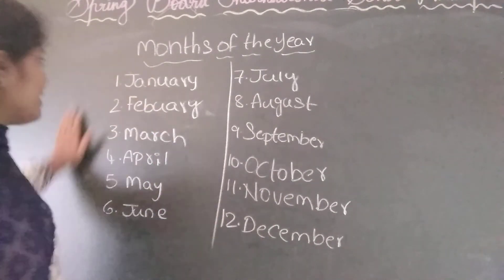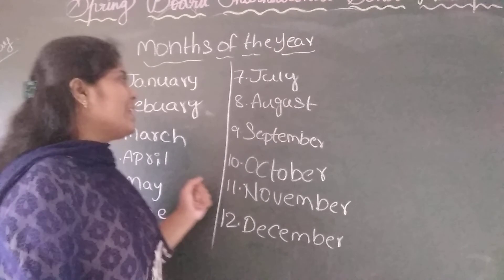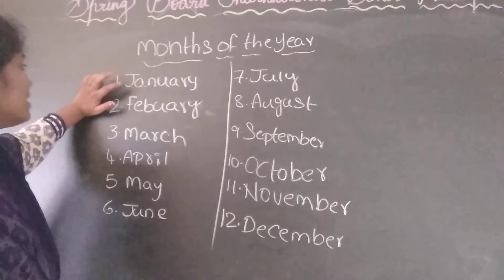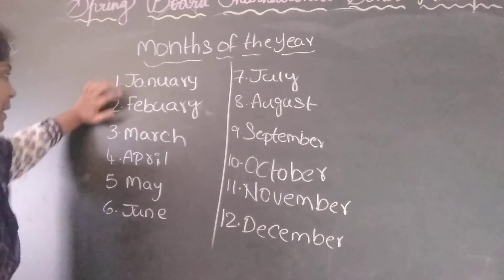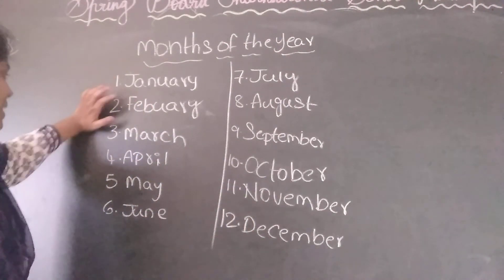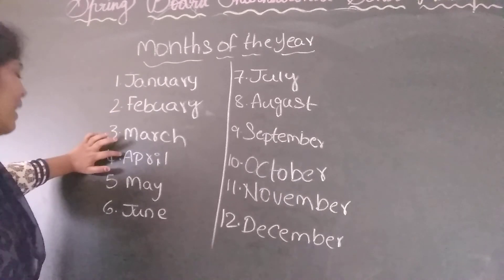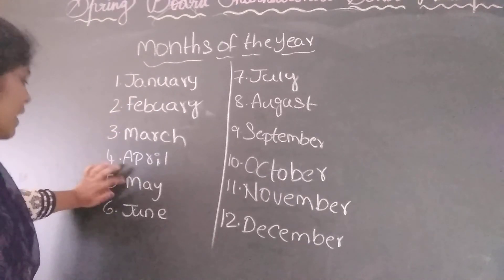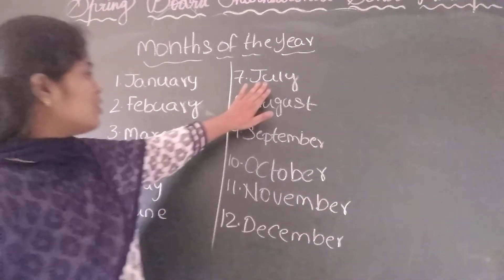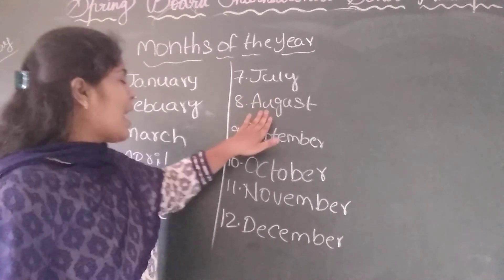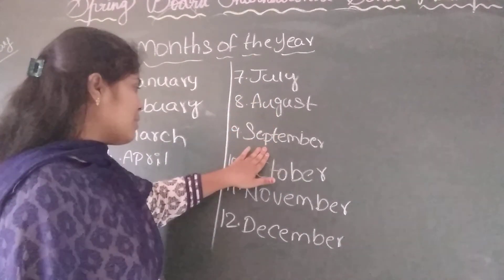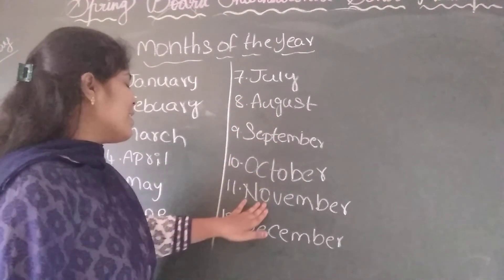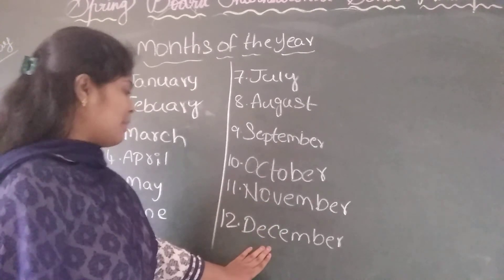So these are the months of the year. What are the months of the year? January, February, March, April, May, June, July, August, September, October, November, December.